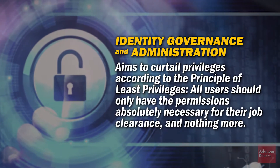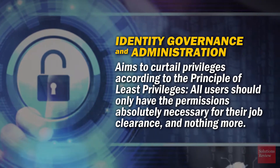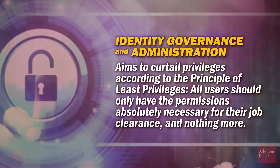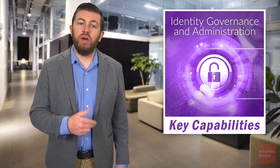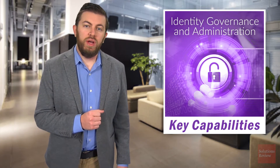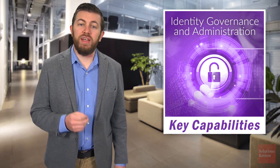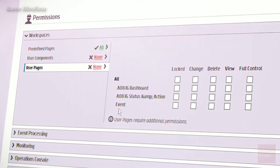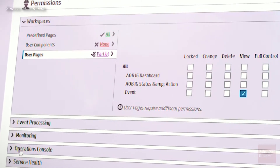Identity governance and administration aims to curtail privileges according to the principle of least privilege. IGA also focuses on curtailing unwarranted permission accumulation. Even the most unassuming account on your network could gain privileges beyond its role. As these accounts become bloated with permissions, they become prime targets for hackers and insider threats who wish to exploit their unmonitored access. Additionally, IGA offers cybersecurity professionals greater visibility over a user's permissions and accounts.